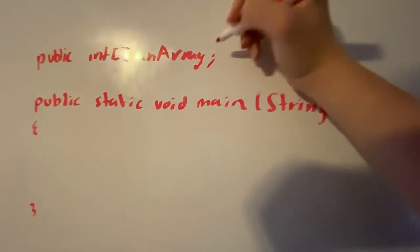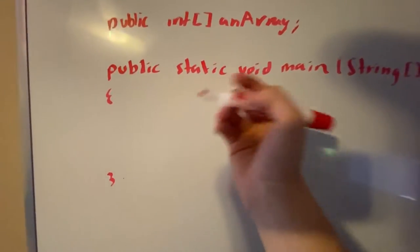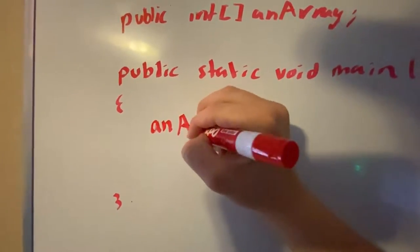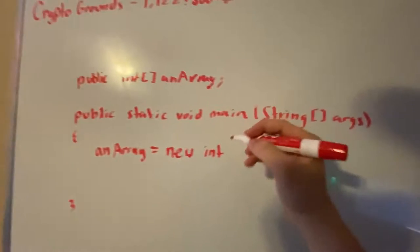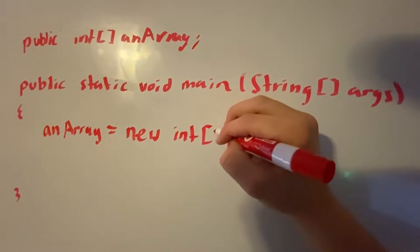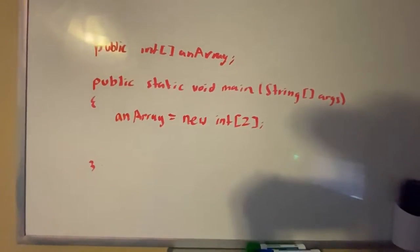So we can obviously just have it like this in our main method. We can just do an array equals new int. Since this is an int array, right? Int array with a size of 2. We can have it like this.